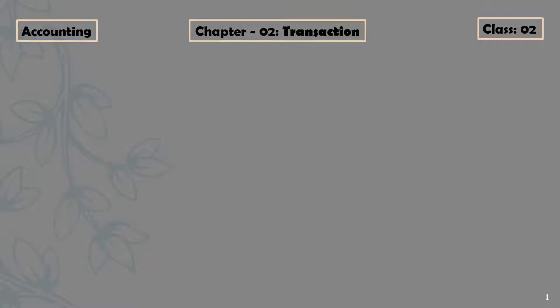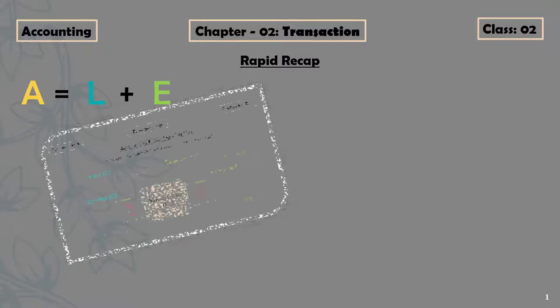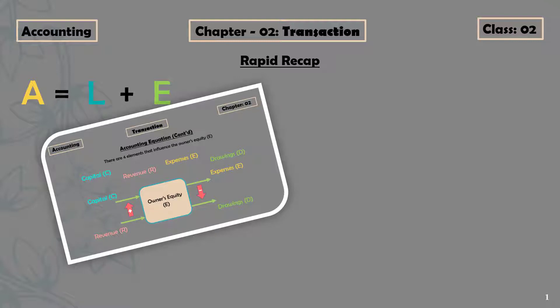Hi there, this is the Rapid Digger of the last class. In our last class, we studied the basic concept of the accounting equation: A equals L plus E. Then we further studied the details of owner's equity — there are four elements that influence owner's equity: capital, revenue, expenses, and drawings. Two of them, capital and revenue, increase owner's equity.